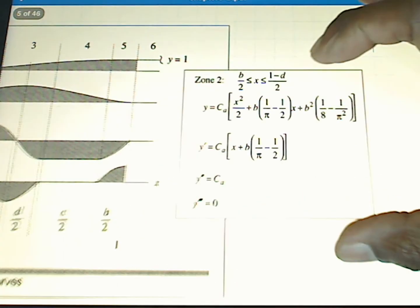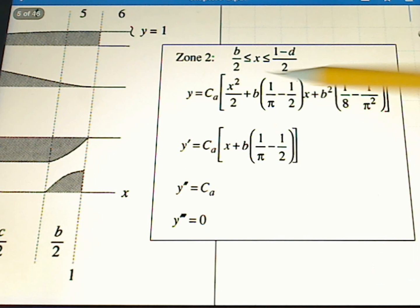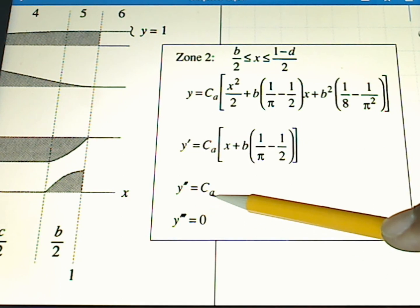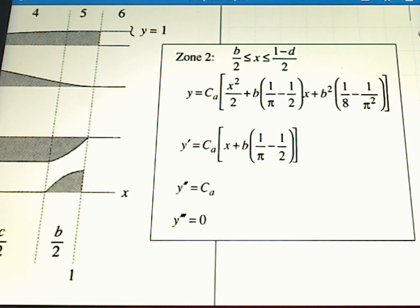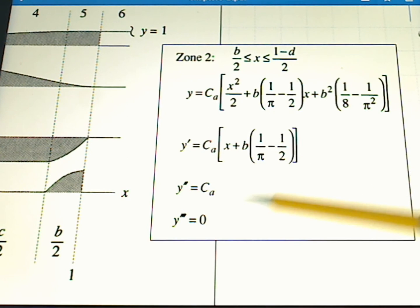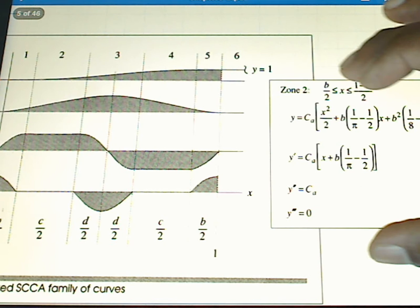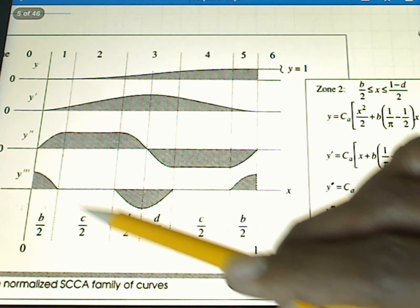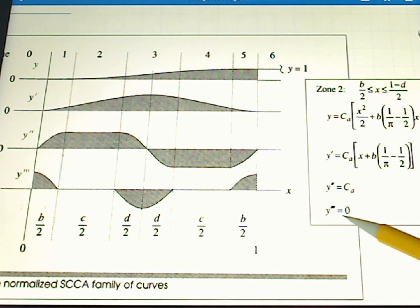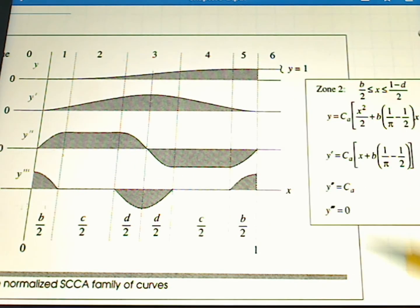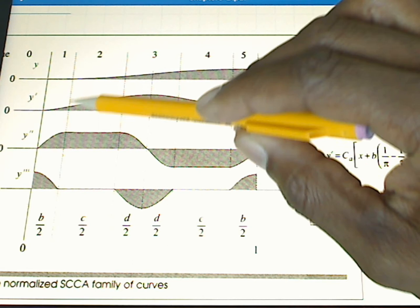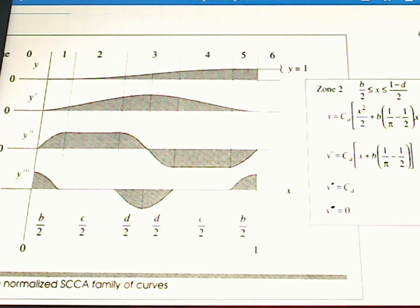Here we see these equations. The position equation looks as follows. Our velocity equation looks as follows. Our acceleration equation is just equal to CA, and our jerk equation is equal to zero. If we look at zone two, we do indeed see that the jerk is zero, just as the equation said it would be. We have a constant acceleration equal to CA, and we have some more complicated function for both the velocity and for the position curve.